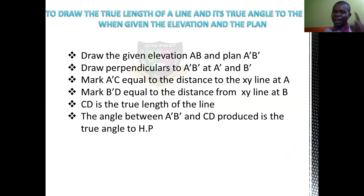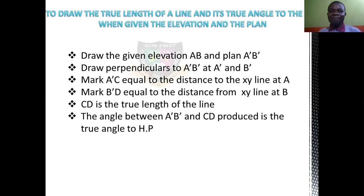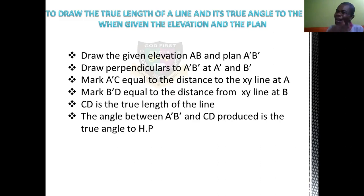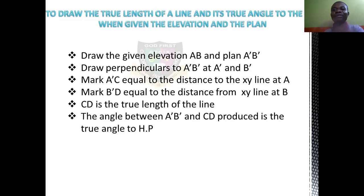You should know what elevation is; you should know what plan is. Draw the given elevation AB and plan A prime, B prime. Then draw perpendiculars to A prime B prime at A prime and at B prime. Another thing: mark A prime C equal to the distance from the XY line at A. Then mark B prime D equal to the distance from the XY line at B. Then C D is the true length of the line. The angle between A prime B prime and line C D is the true angle to the horizontal plane. So from here we are seeing the true length, then we are seeing the true angle — that's what we call the line in space.